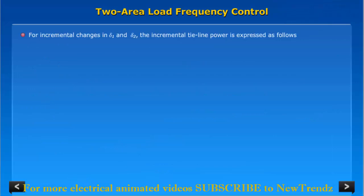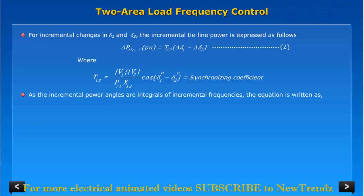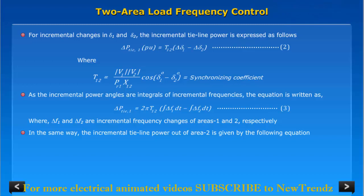The incremental tie line power is expressed as follows. As the incremental power angles are integrals of incremental frequencies, the equation is written as where Δf1 and Δf2 are incremental frequency changes of areas 1 and 2 respectively. In the same way, the incremental tie line power out of area 2 is given by the following equation.